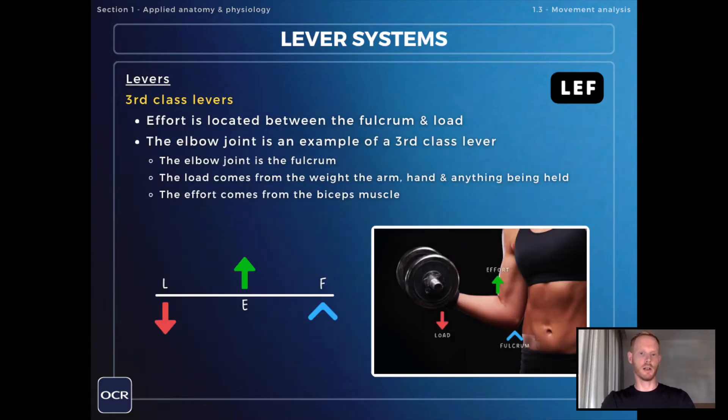Finally moving on to third-class levers, the effort is located between the fulcrum and load force on the lever arm. The example that you need to know about is at the elbow joint. The joint itself is the fulcrum, effort comes from the bicep muscle as it contracts and the load force comes from the weight of the arm, hand and anything being held, in this case a dumbbell.